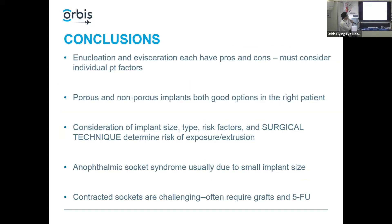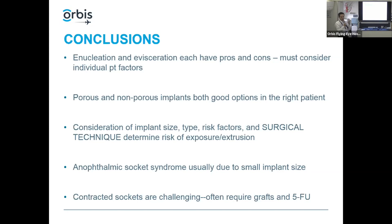In conclusion, enucleation and evisceration each have pros and cons, but there are certain cases where one is clearly better than the other. Porous and non-porous implants are both reasonable options in the right patient - a lot of extrusions have to do with surgical technique, but also consider implant size, type, and individual patient risk factors. Anophthalmic socket syndrome is usually due to an inadequately sized implant, with various surgical and non-surgical options including filler or fat transfer. Contracted sockets are challenging cases that often require grafts and 5-FU, but it is a marriage and partnership with your ocularist.